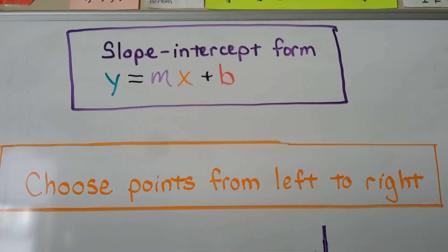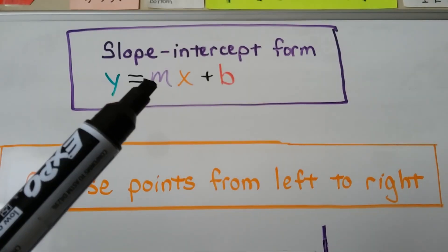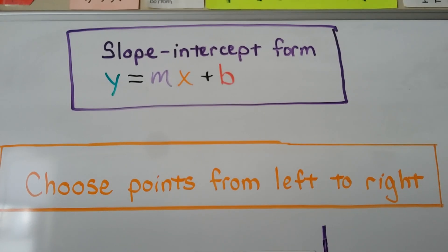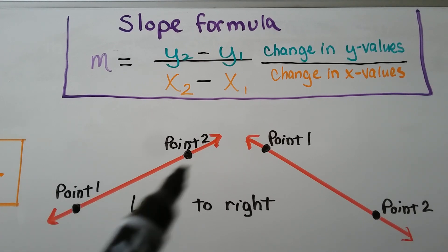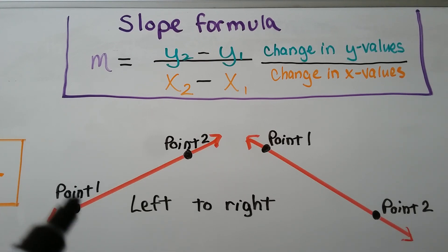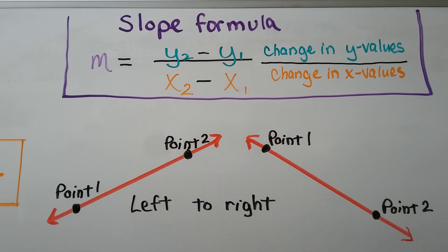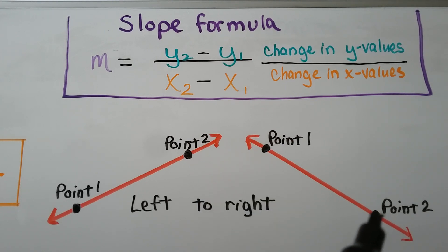Remember that the slope-intercept form of an equation is y = mx + b, where m is the slope and b is our y-intercept. When you're choosing points as ordered pairs, choose them from left to right. If our line is rising to the right, we choose from left to right — that would be point 1 and point 2. Even if it's falling to the right, we go left to right.